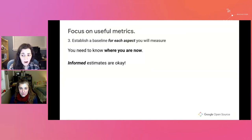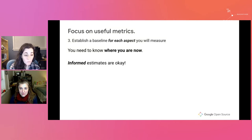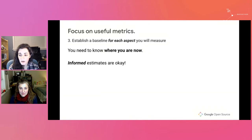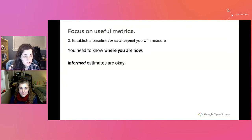Now we can establish a baseline for each aspect. You can't measure progress or regression without understanding where you are currently. If you don't know where you are now, you can make an informed estimate in a few ways. One way is to examine other projects to see where they are as an analytical starting point, then measure for a short period of time before you reestablish your baseline.